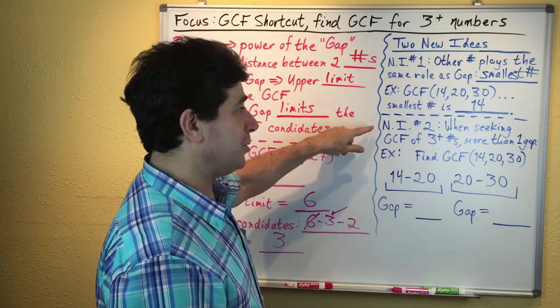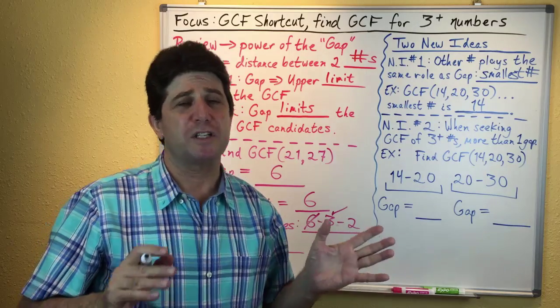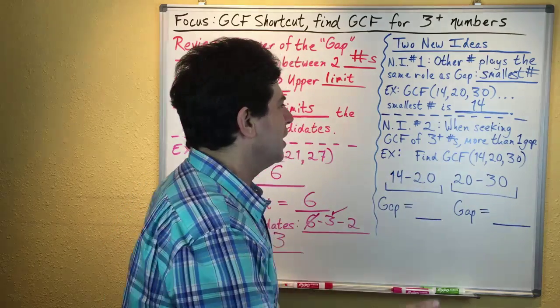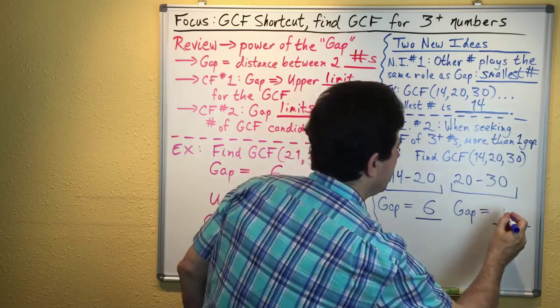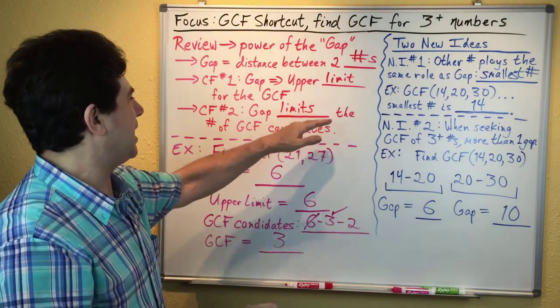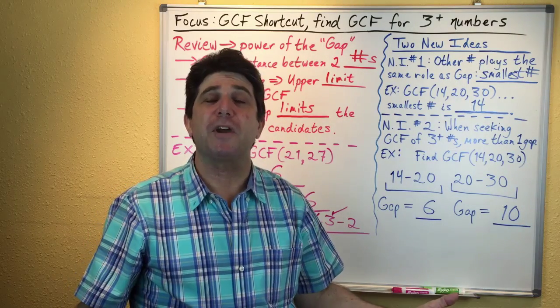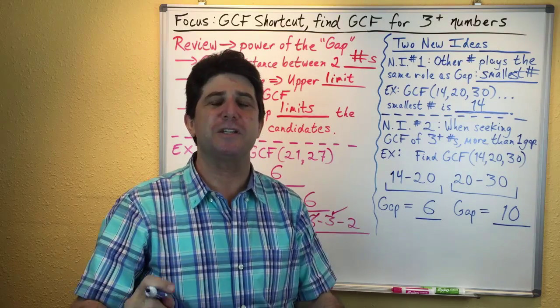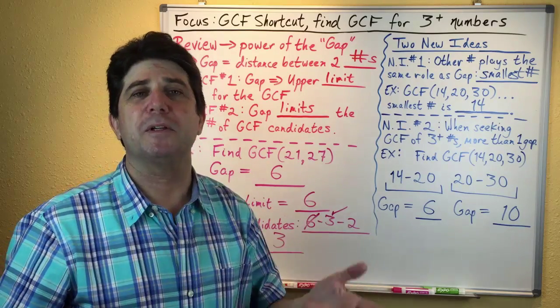New idea number two: when you're looking for the GCF of three or more numbers, you're going to have two or more gaps. For example, with 14, 20, and 30, you have a gap between 14 and 20 that's 6, and another gap between 20 and 30 that's 10. You can use both of those gaps to winnow down the number of GCF candidates. The more gaps you've got, the more ways you have to limit the number of possible candidates.